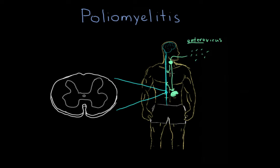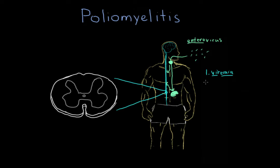How does it actually get to the spinal cord? That's not entirely known. There are two theories. One is viremia, which is when the virus gets into the blood. 'Emia' refers to anything associated with being in the blood. From the blood, it somehow finds its way to its specific target — neurons in the spinal cord. That's one theory.